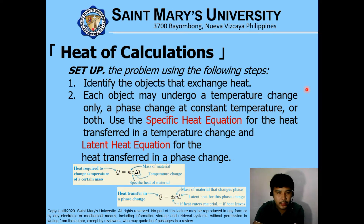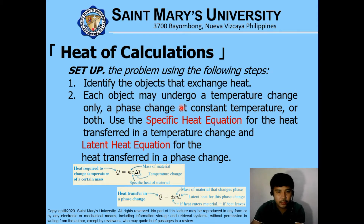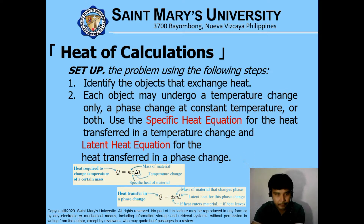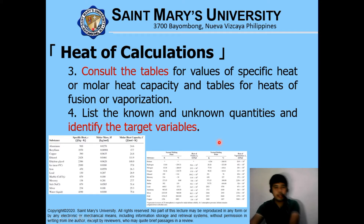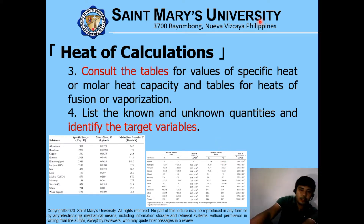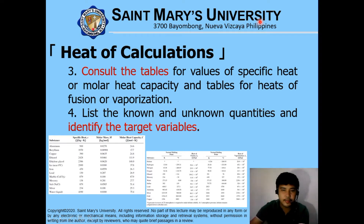The second heat calculation strategy is to set up the problem using the following steps. Identify the objects that exchange heat. Each object may undergo temperature change only, sometimes phase change at a constant temperature, or both. Use the specific heat equation for heat transfer and temperature change, or the latent heat equation for phase change. You can consult the tables for values of specific heat and molar heat capacities, as shown here. List the known and unknown quantities and identify your target variables.